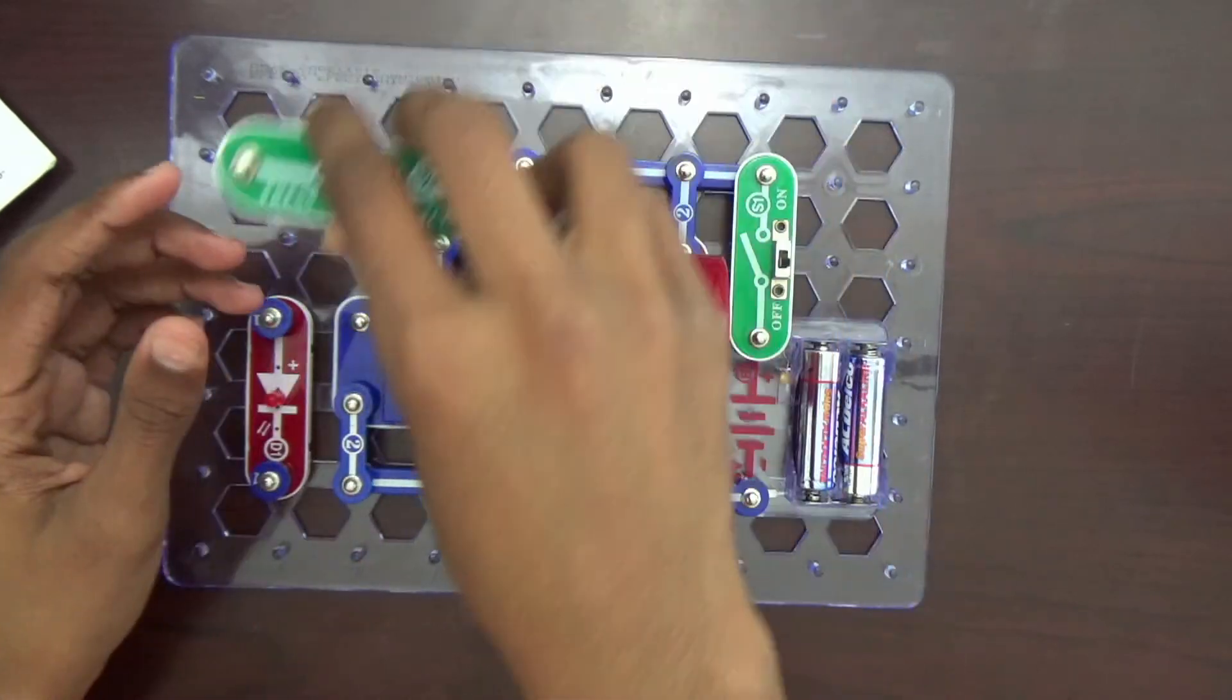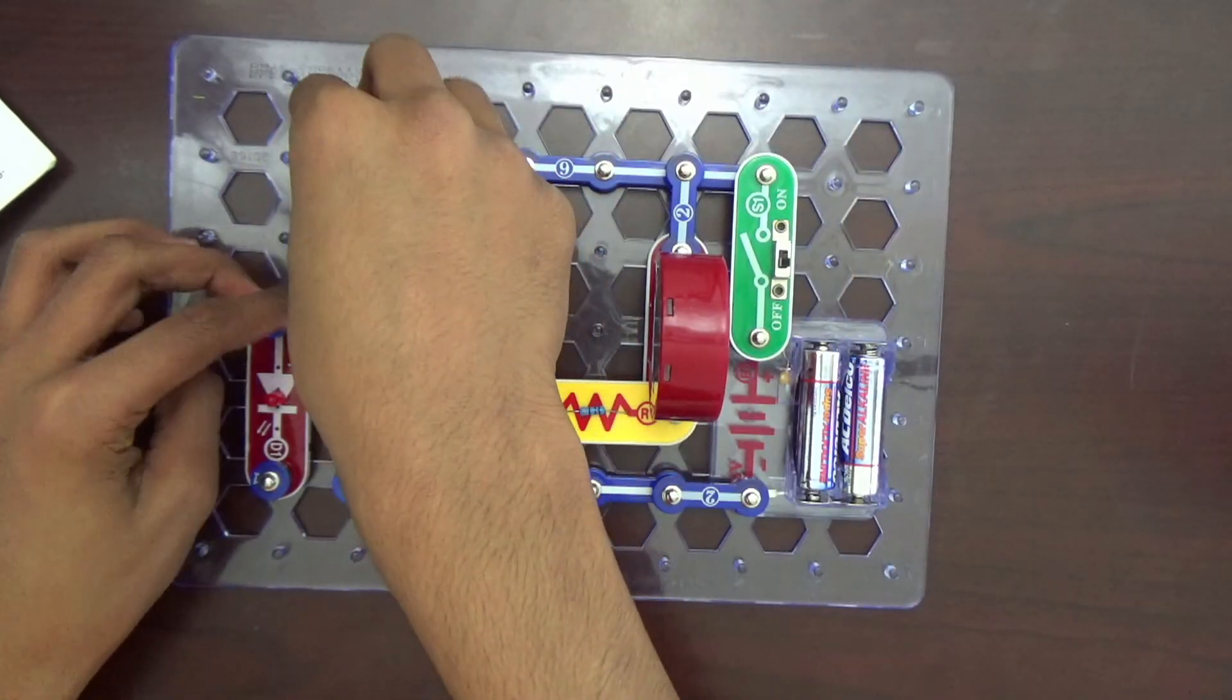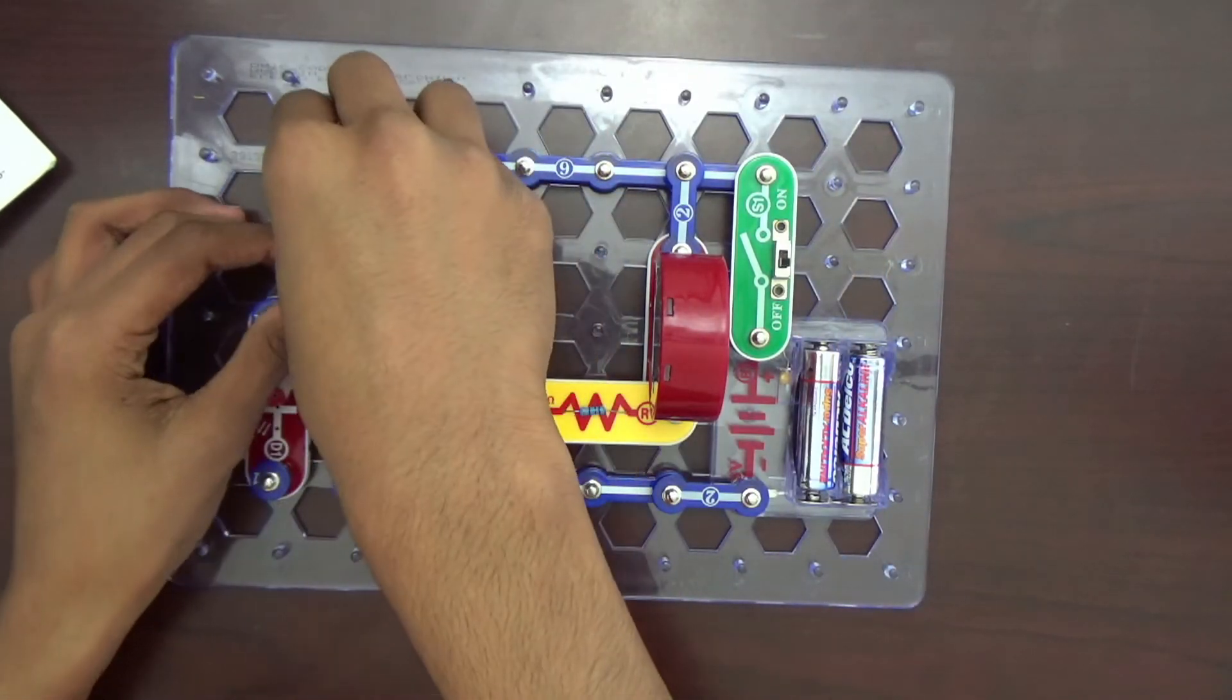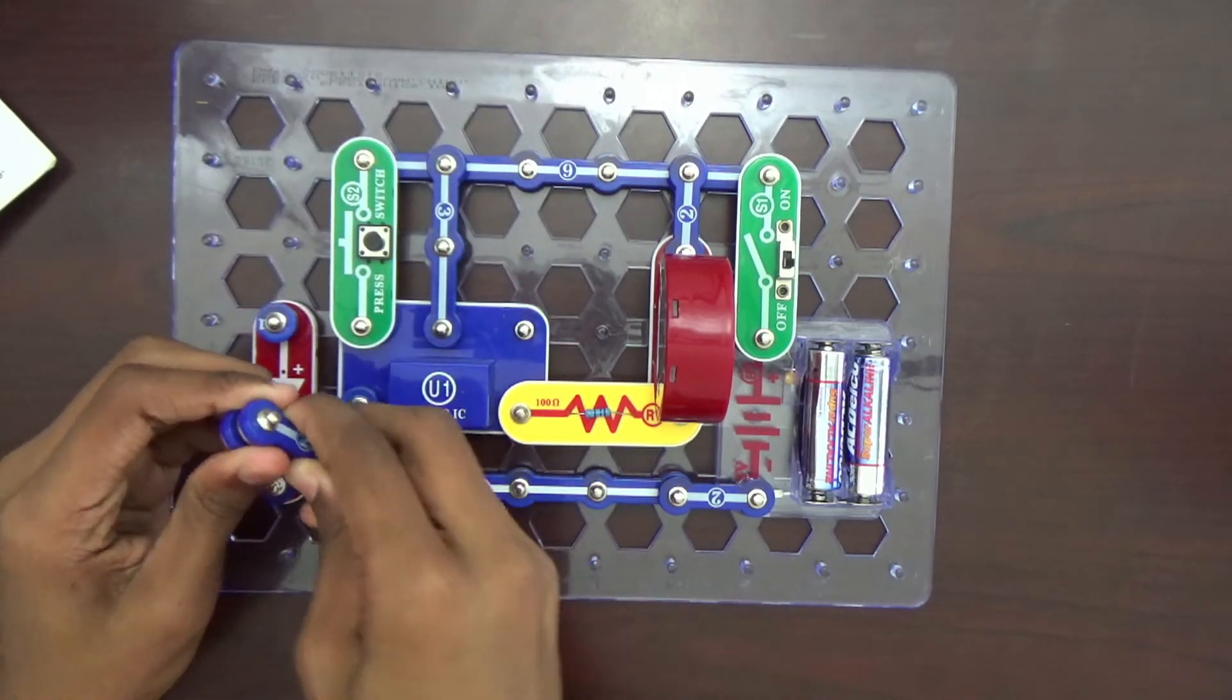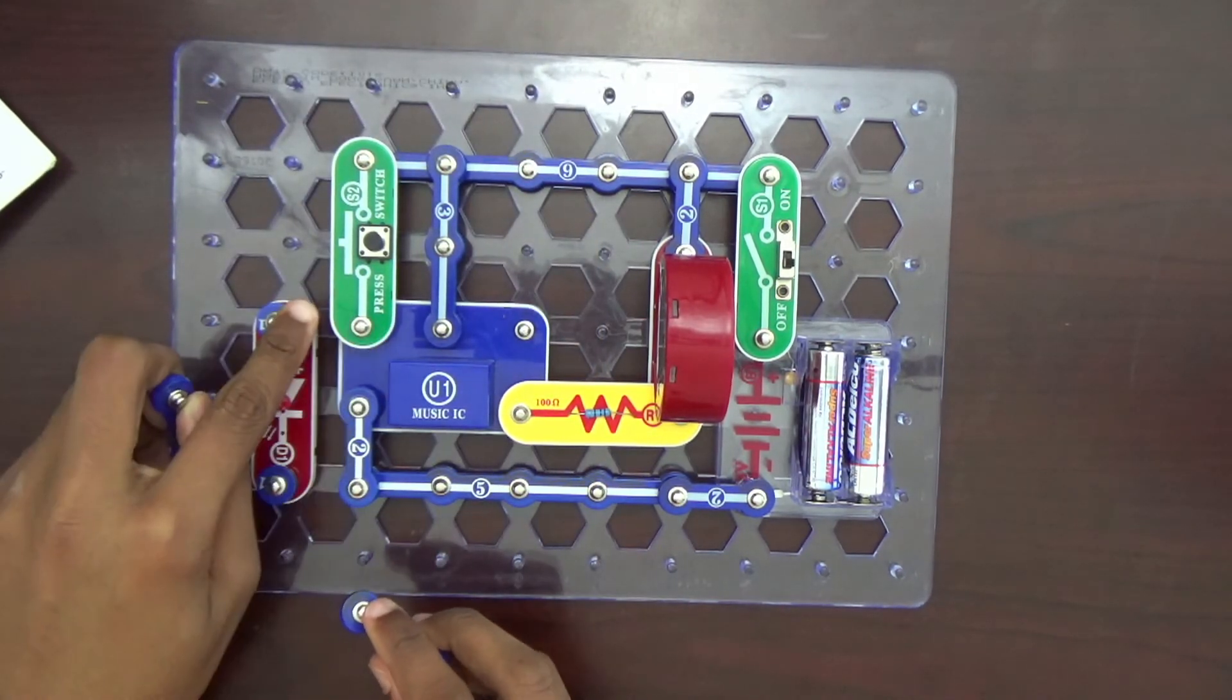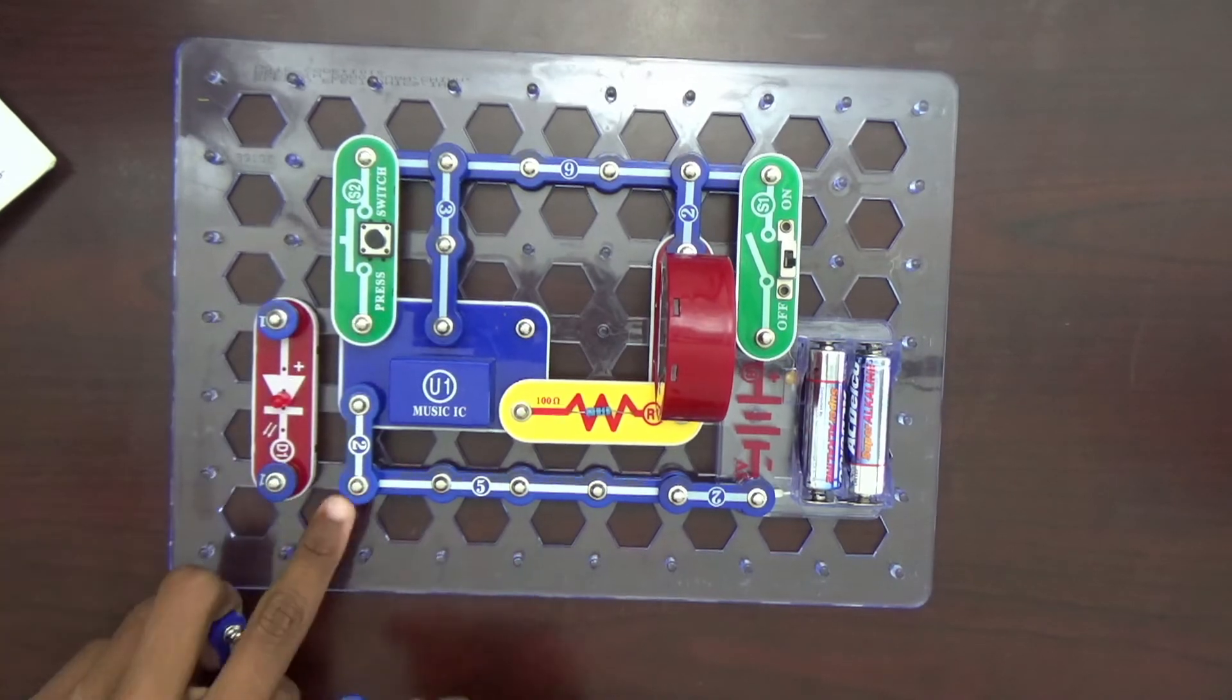And then we want to connect the last switch, that's 2, to these two. And then the last two connections are connecting the LED from here to here and here to here.